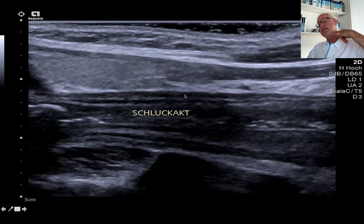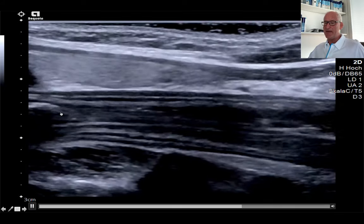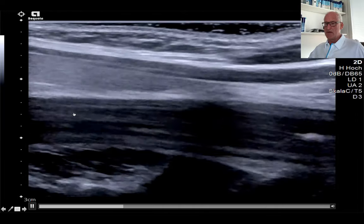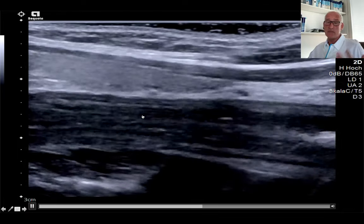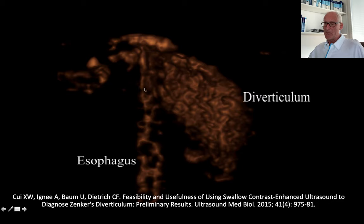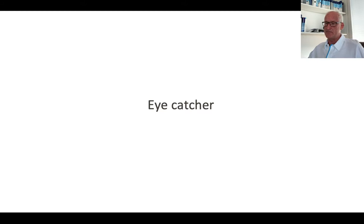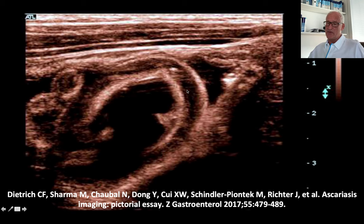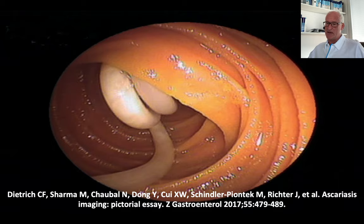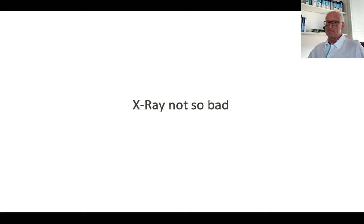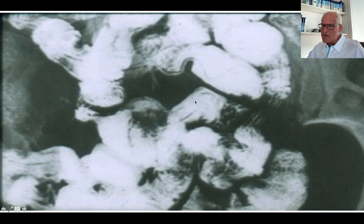The esophagus, to the left in the cervical region, allows you to nicely depict the swallowing act. In older patients, you might depict by contrast-enhanced ultrasound the Zenker's diverticulum retaining contrast agent to the left side of the cervical region. Another eye-catcher: parasites — the luminal aspect. Here you can see ascariasis, nicely depicted by endoscopy as well, and on X-ray you can likewise see the ascarides ingesting luminal contrast agent.